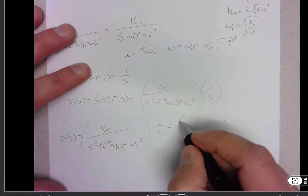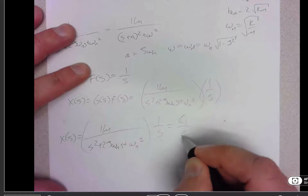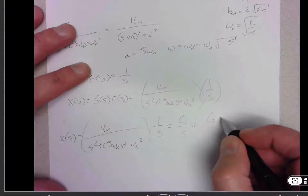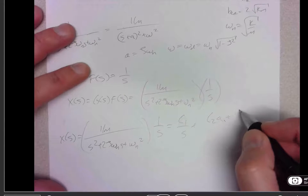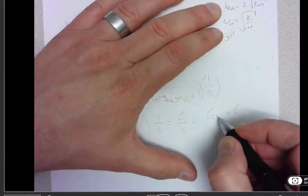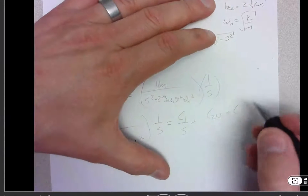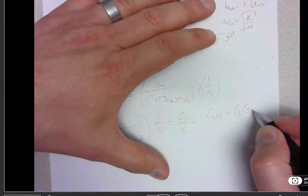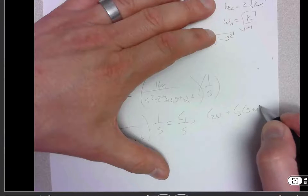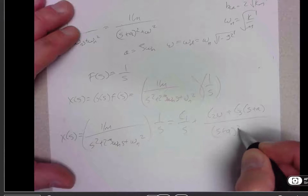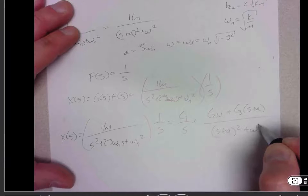We're going to write that using partial fractions as c1 over s, plus c2 omega-d over s plus a squared plus omega squared, plus c3 times s plus a over s plus a squared plus omega squared.